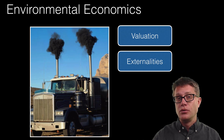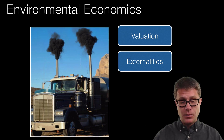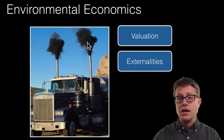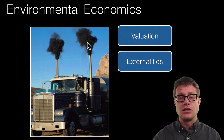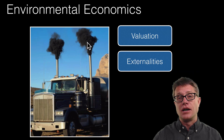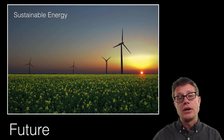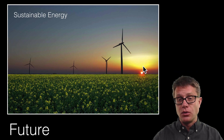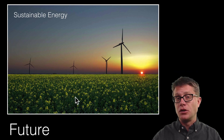One thing we are not even fully considering yet are all the externalities of fossil fuels. We do not put a true value on fossil fuels because as we use them we are polluting our environment. One of the biggest externalities is that we are increasing the amount of carbon dioxide in the atmosphere, leading to global change in temperature. These external costs are things we are going to have to consider as we move towards renewable forms of energy — solar, wind, or sustainable biomass — to eliminate the energy crisis.